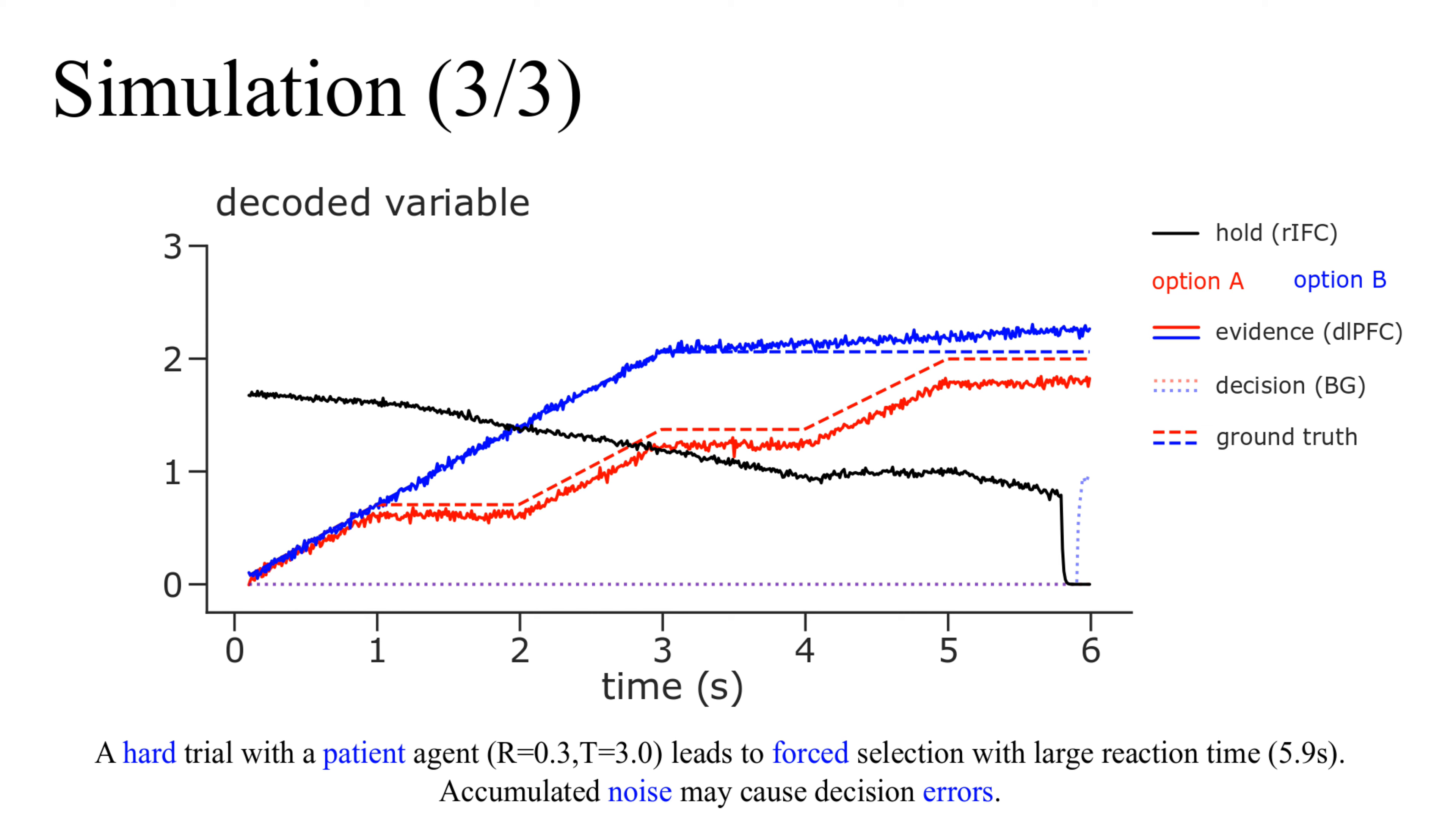In this trial, we created a patient agent with high threshold and low urgency. Evidence is again ambiguous, and the agent's threshold is never crossed. We force a decision at the end of the trial by inhibiting the hold at 5.8 seconds.